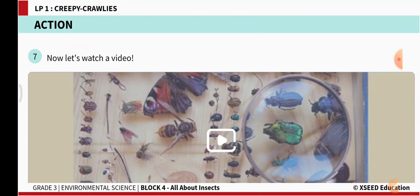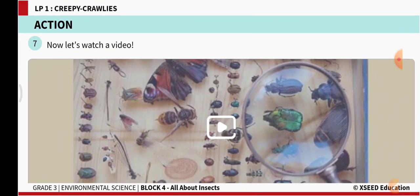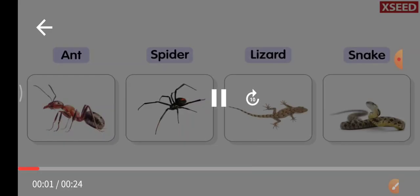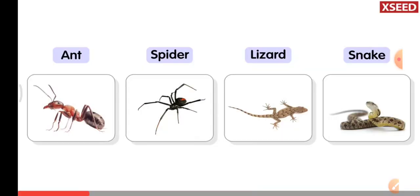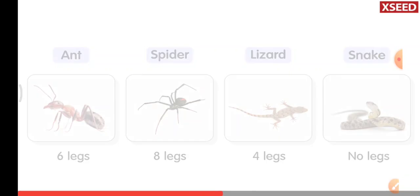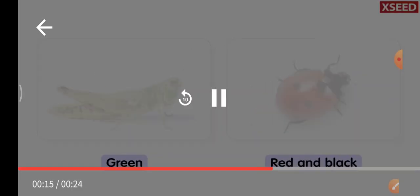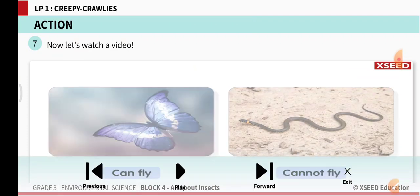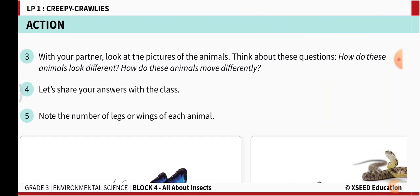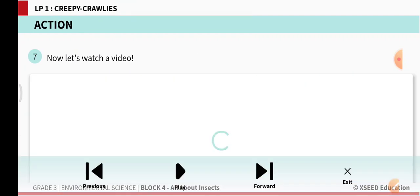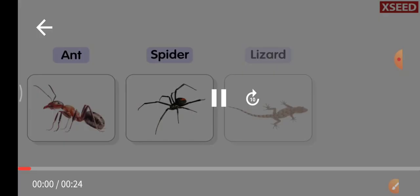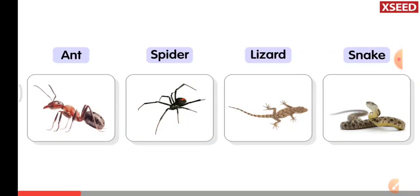Now let us watch this video. There are many small animals which creep, crawl, or fly around us. Ant has six legs, spider has eight legs. Let us watch it again — spider, lizard, snake, ant. How many legs does an ant have? Six legs.